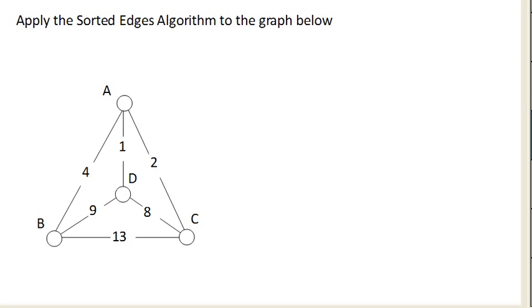And the idea here is we're going to start out by listing all of the edges in the graph from cheapest to most expensive. So here A to D is the cheapest with a cost of 1, A to C is the next cheapest with a cost of 2, A to B cost of 4, let's see, C to D with a cost of 8, B to D is a cost of 9, and B to C has a cost of 13.